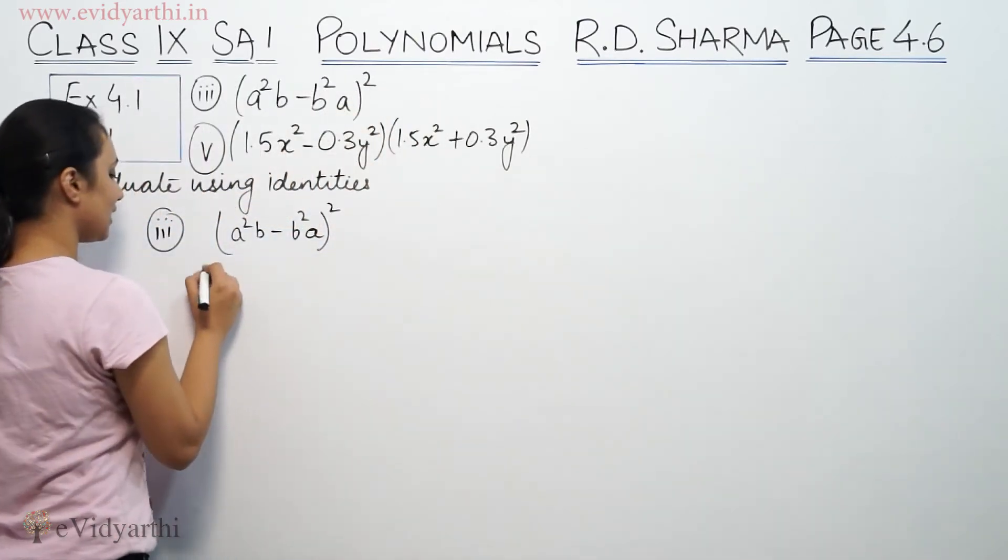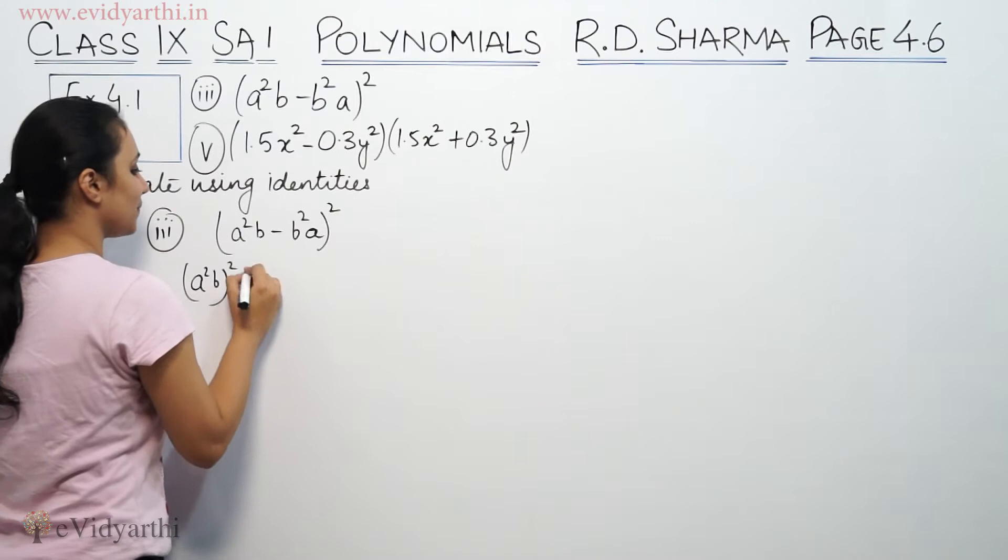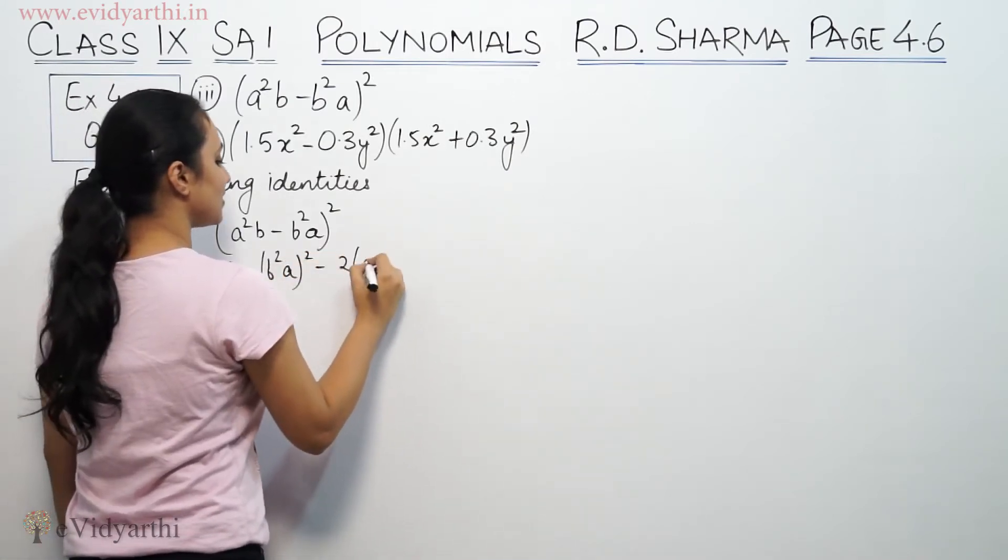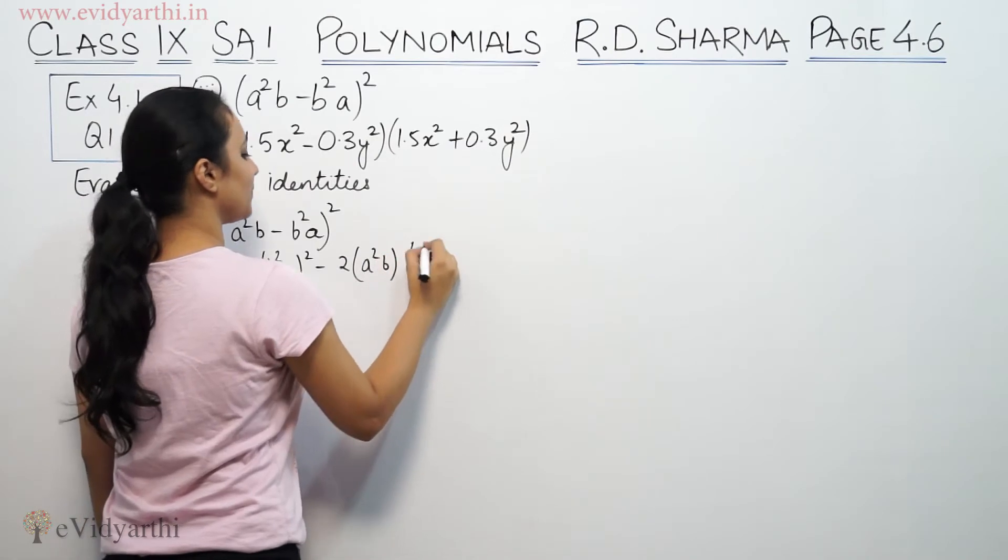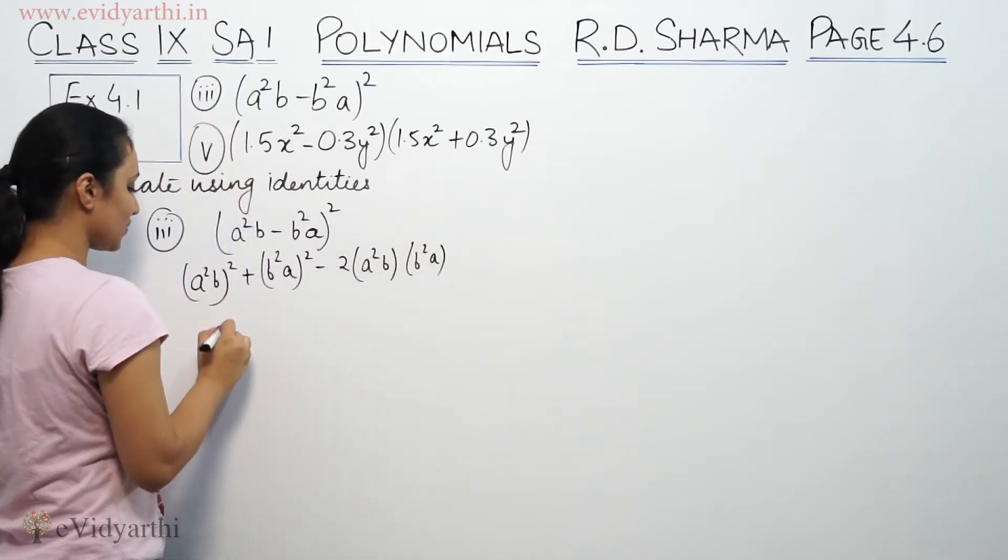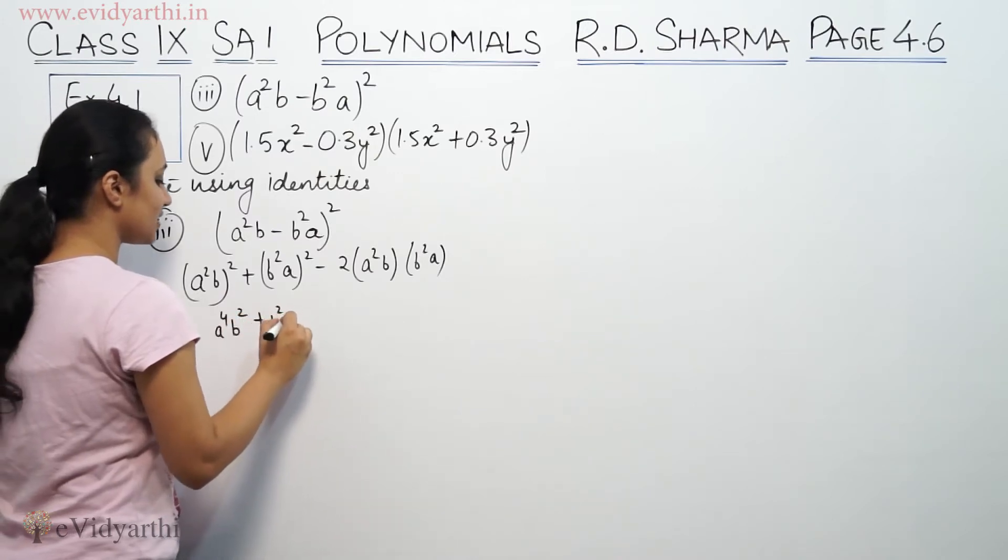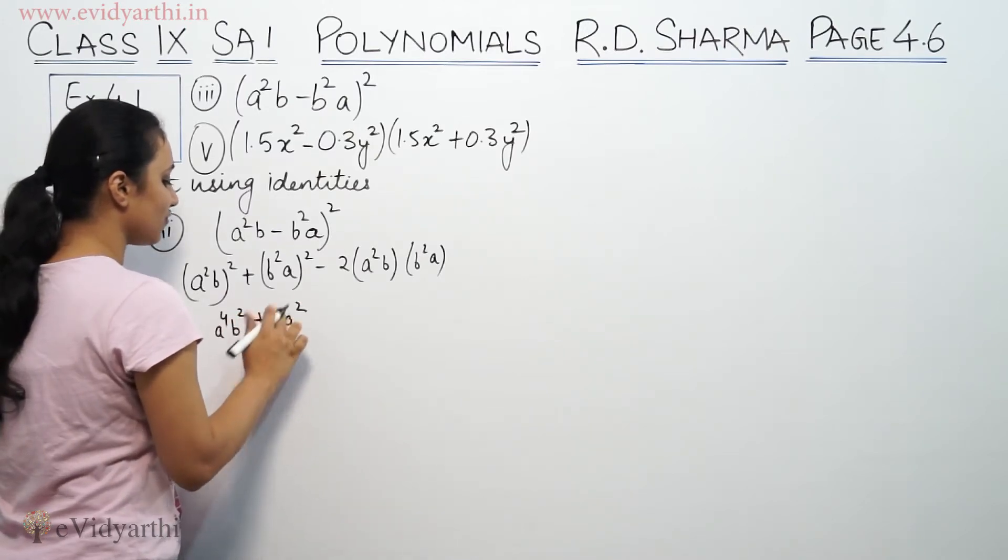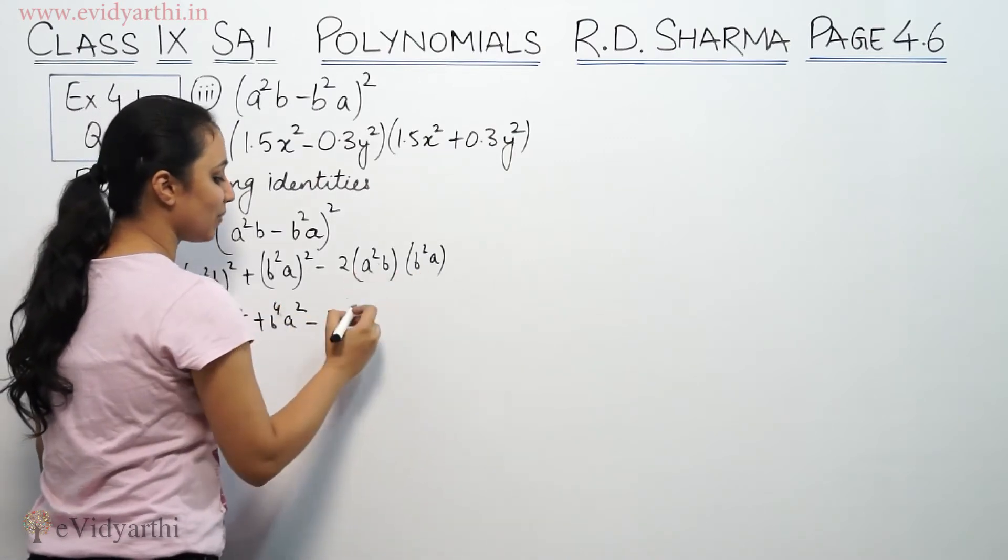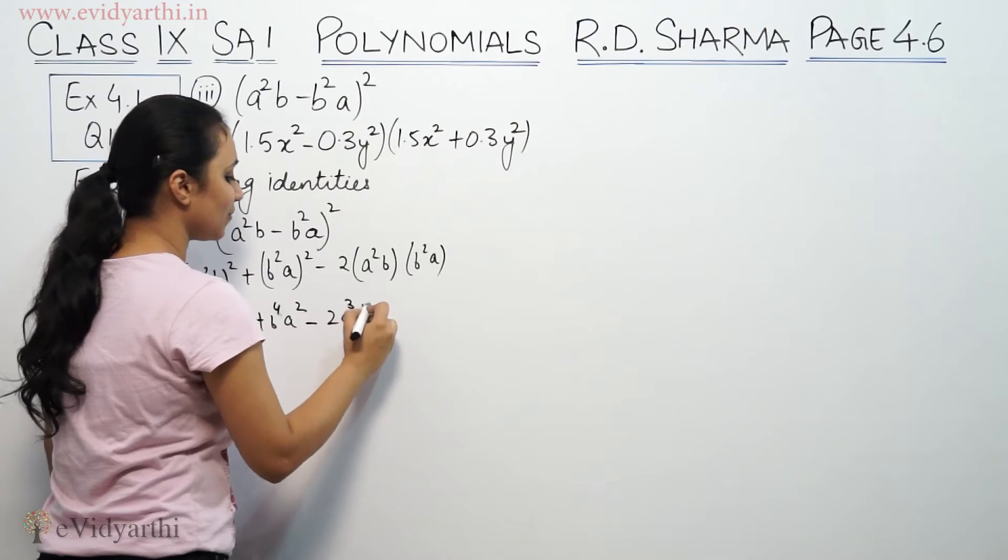So this will be (a²b)² plus (b²a)² minus 2 times a²b times b²a. This gives us a⁴b² plus b⁴a² minus 2a³b³.